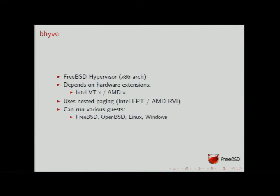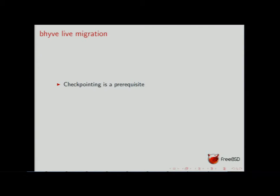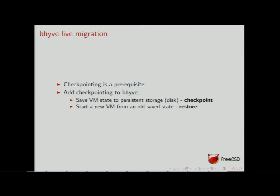Beehive can run various guests — until now we only tested FreeBSD with the Save/Restore feature. Everyone is talking about Beehive live migration, but as a prerequisite we have to support checkpointing. Live migration basically means: checkpoint the VM on the source host, migrate the memory to the destination, and start the VM on the destination host. To add checkpointing to Beehive, we save the VM state — memory, internal state, hypervisor state — to persistent storage. When restoring, we create a new virtual machine and initialize all structures and memory from what was saved on disk.